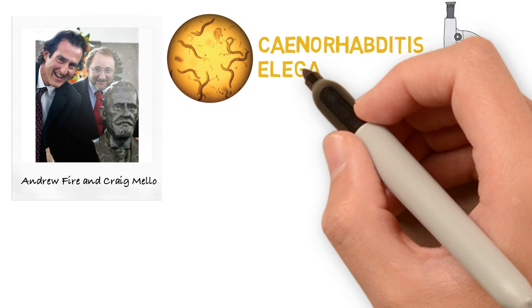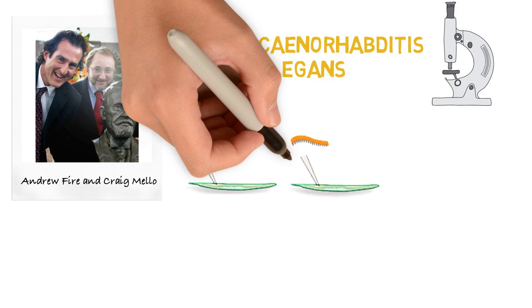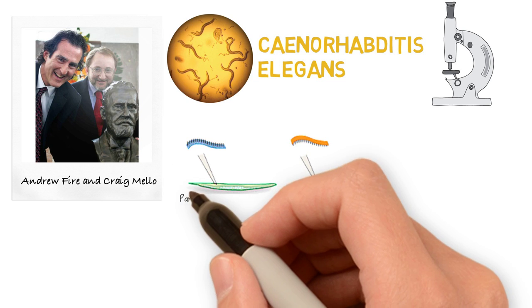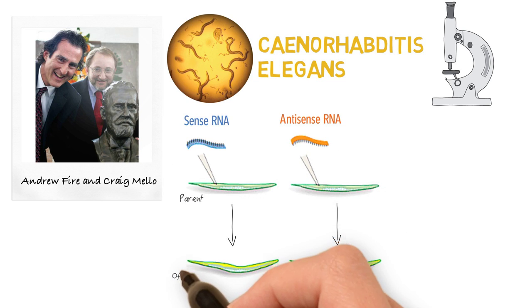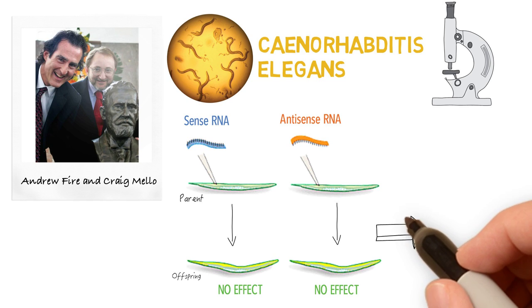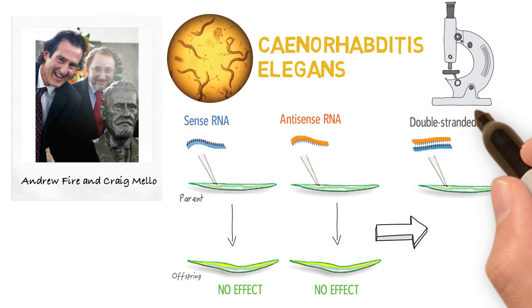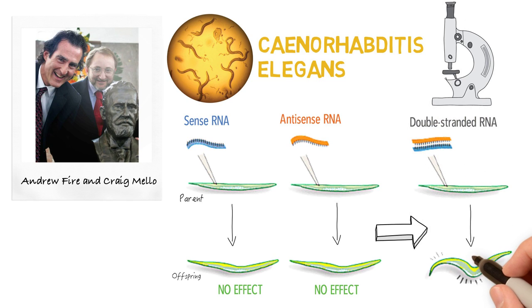They first individually introduced sense and antisense strands of RNA that coded for a muscle protein into the worms, but nothing happened. However, when they introduced double-stranded RNA with both sense and antisense strands, the worms began twitching, exhibiting that the muscle protein that the RNA matched was no longer being produced.